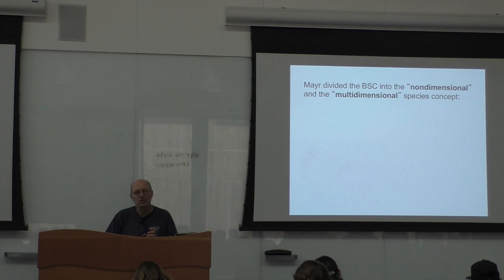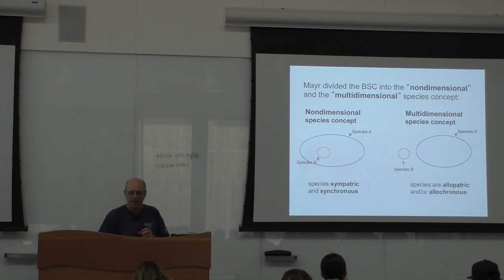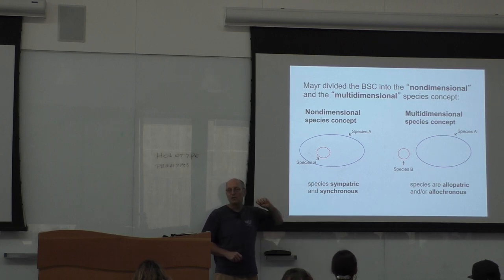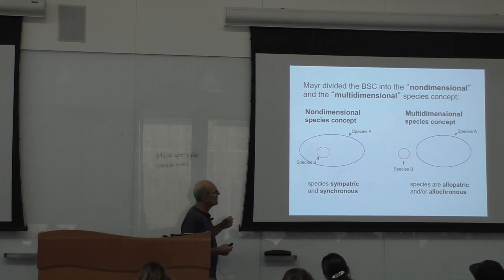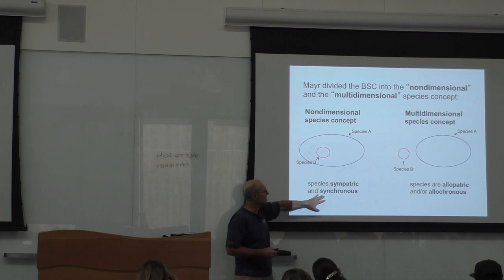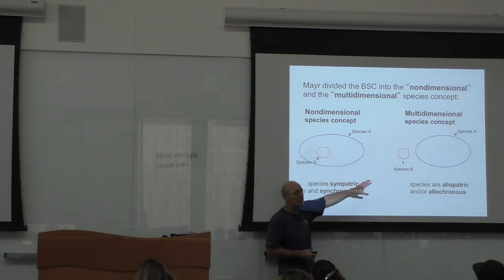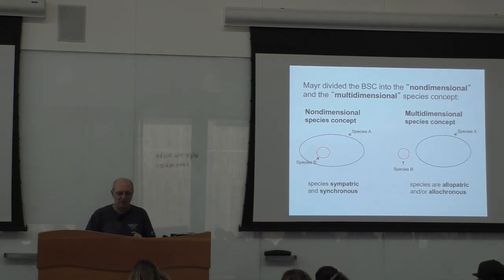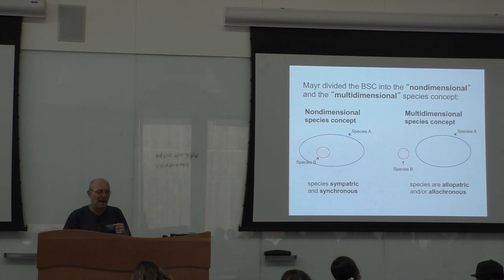Ernst Mayr divided the biological species concept into two parts. Non-dimensional and multi-dimensional, which nowadays people call sympatric and allopatric. You have the sympatric situation, which he did not believe exists. He did not think it was possible but he raised it as a possibility and now there is a lot of experimental evidence that actually does exist. I will talk about it a little bit later. So this is when the two species live in the same place. It's called sympatric or synchronous, meaning that they reproduce at the same time. Or the multi-dimensional is allopatric. The two species are geographically in two different places and they are allopatric or allochronous. Allochronous means they are either separated in space, allopatric, or in time, allochronous.